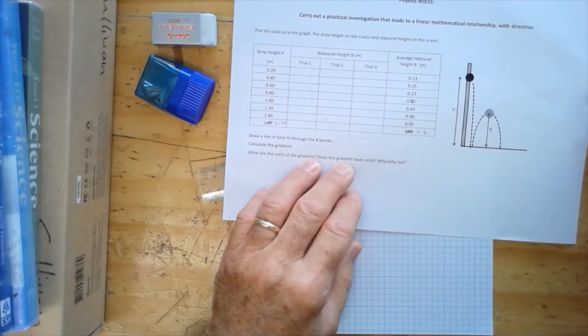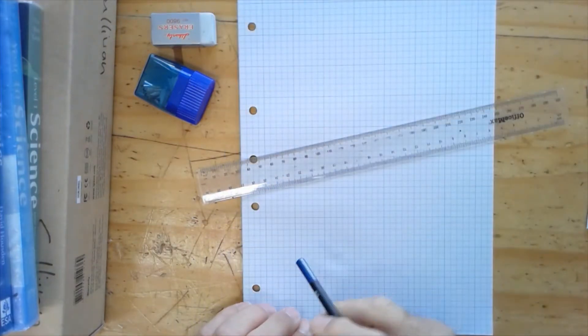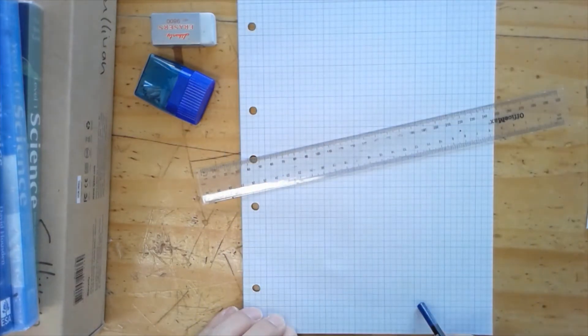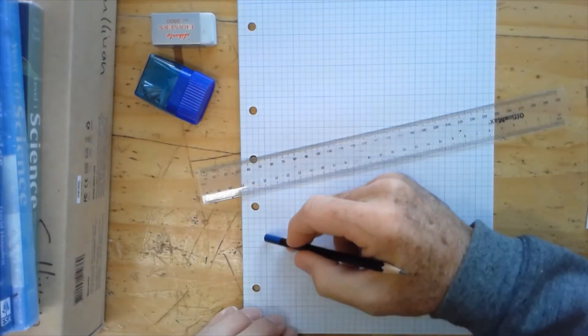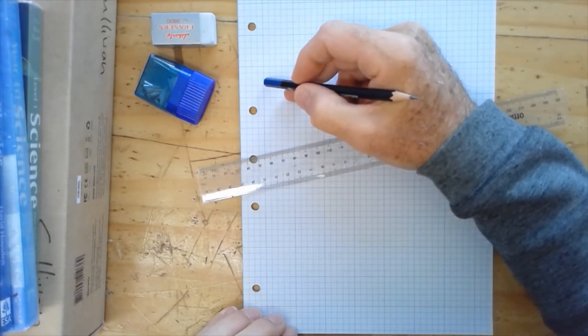So when we draw our graph, we're going to have our independent variable along this axis, the height we've dropped the ball from. And on the y-axis, we're going to have our dependent variable, the rebound height.